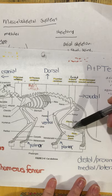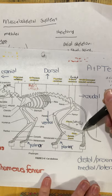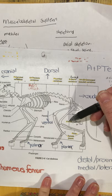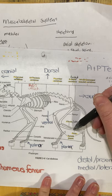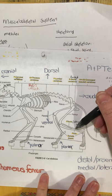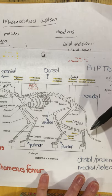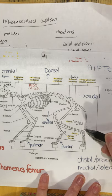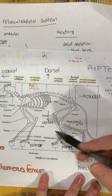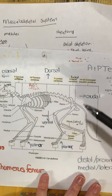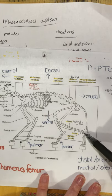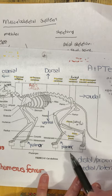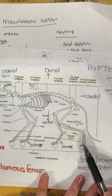Moving more distal from the patella, we have the tibia and the fibula. The fibula is lateral to the tibia — the tibia is the more medial bone. Then we have the tarsals, which make up the hock joint. Just like we had metacarpals beyond the carpals, we have metatarsals beyond the tarsals. And then we have the phalanges — the toes.